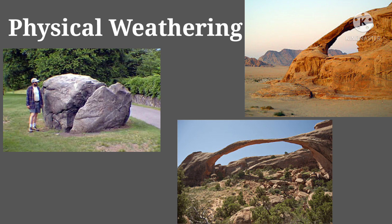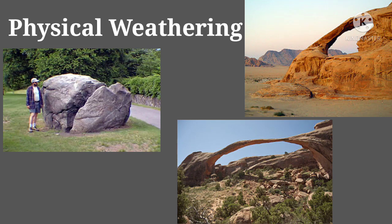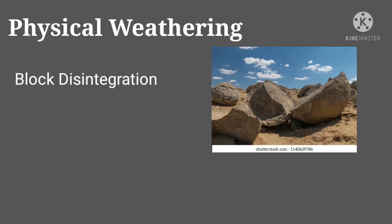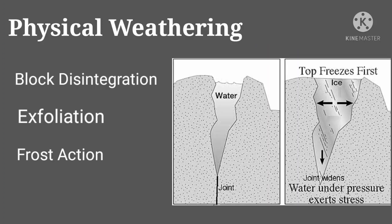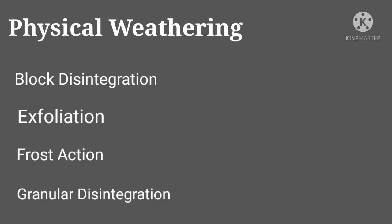Examples of physical or mechanical weathering are basically found in arid or semi-arid regions where the amount of rainfall is less and the range of temperature variation is greater. In such areas we can see the impact of physical weathering more. The different types of physical weathering include block disintegration, exfoliation, frost action, and granular disintegration.